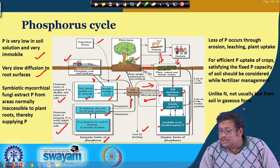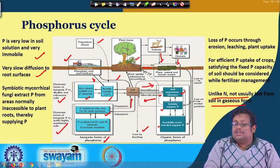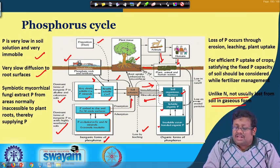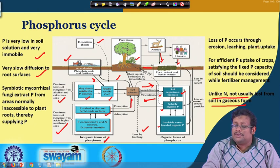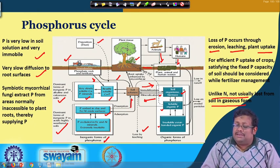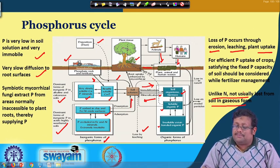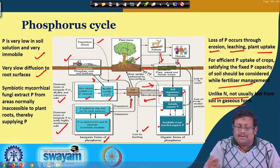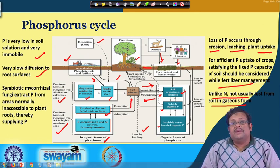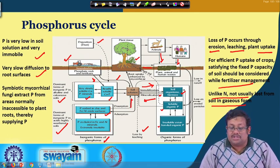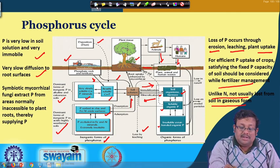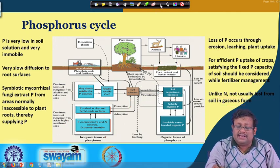It requires symbiotic mycorrhizal fungi to extract phosphorus from areas normally inaccessible to plant roots, thereby supplying phosphorus — we will discuss that later. Unlike nitrogen, phosphorus is not usually lost from soil in gaseous form. Soil loss of phosphorus occurs basically through erosion, leaching, and plant uptake, and for efficient P uptake the phosphorus fixation capacity of the soil should be considered in fertilizer management.